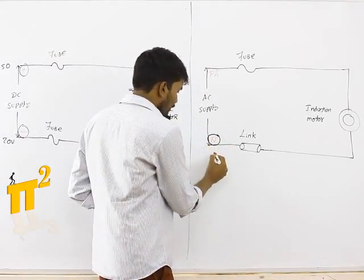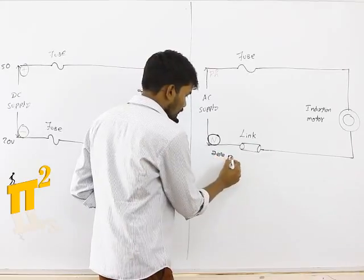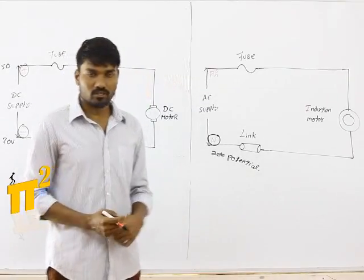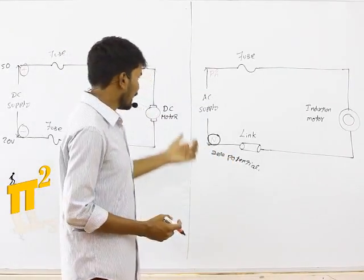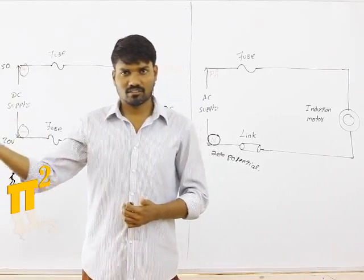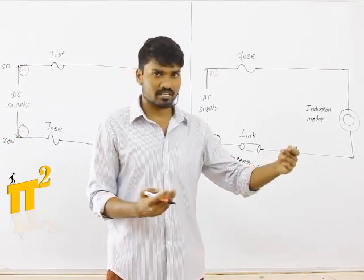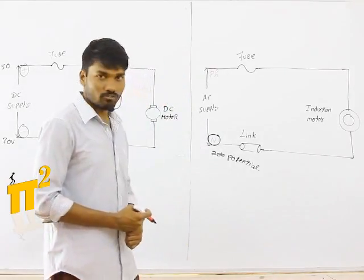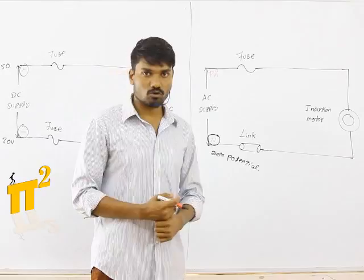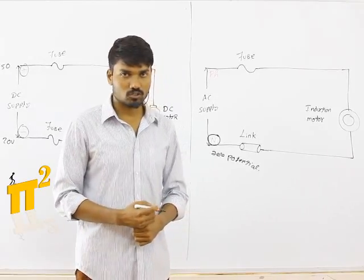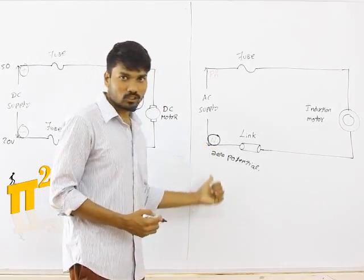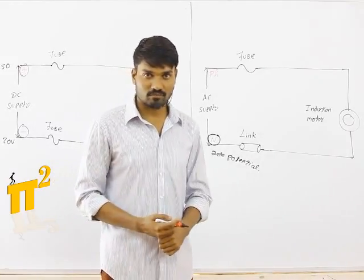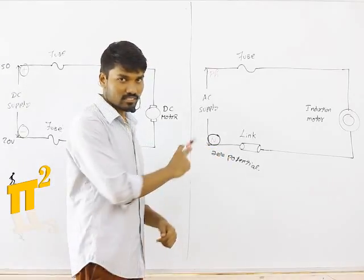A neutral is having zero potential because we get AC supply from generating station, transmission lines, distribution stations, then to our service mains. We know we must go for neutral grounding, so somewhere in the network a neutral is connected to ground, and we know ground is at zero potential.